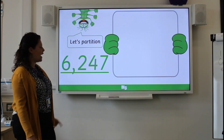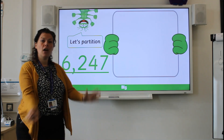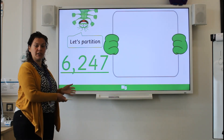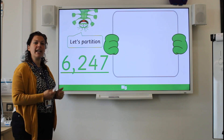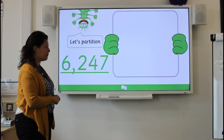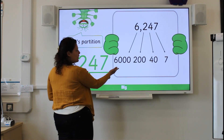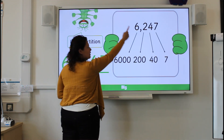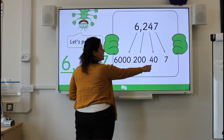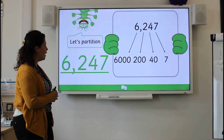Let's have a go at six thousand two hundred and forty-seven. Repeat the number to your teddy or to the screen and then have a go at partitioning it. Let's check your answer: six thousand, two hundred, four lots of ten so forty, and seven ones. Well done!